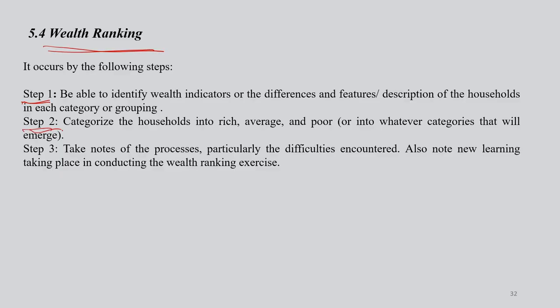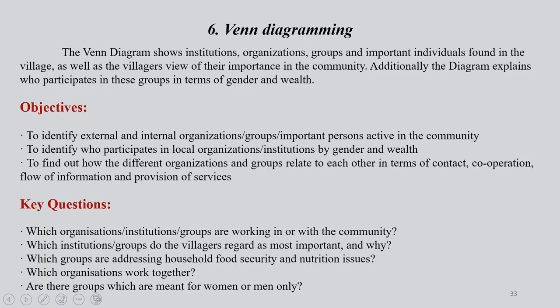Step two is to categorize households into rich, average, and poor on the basis of income. Step three is to take notes of the processes, particularly the difficulties that people or communities encountered. You should also note the new learning or knowledge taking place while conducting the wealth ranking exercise. During the exercise, there will be various kinds of deliberation across and within groups, and it is fascinating to see these dynamics — that also needs to be captured.